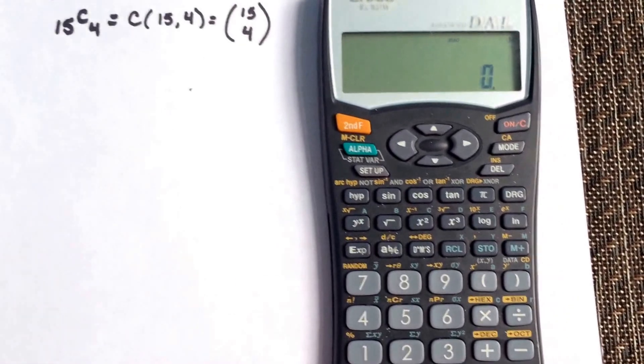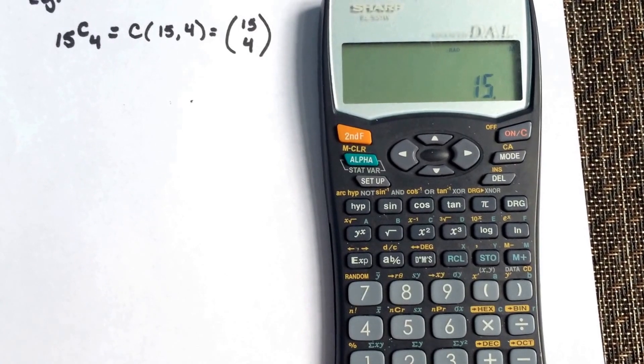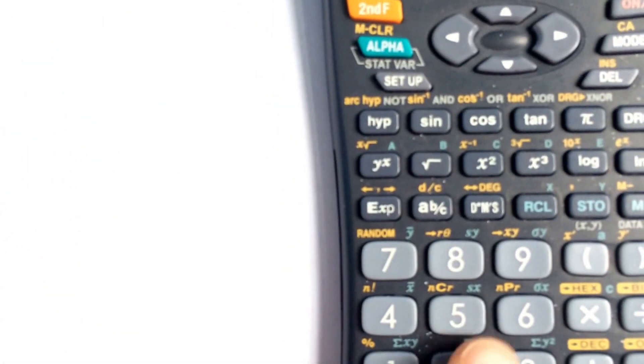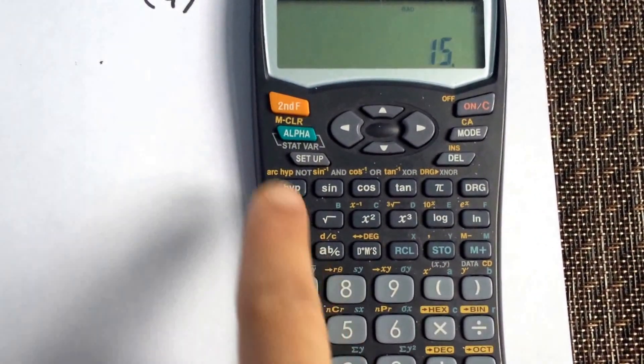What you're going to do is first enter the first number, so 15. That's how many you're selecting from. Then on top of the 5 you'll see that it says NCR. That's your combination function.